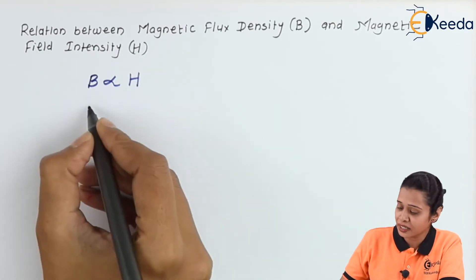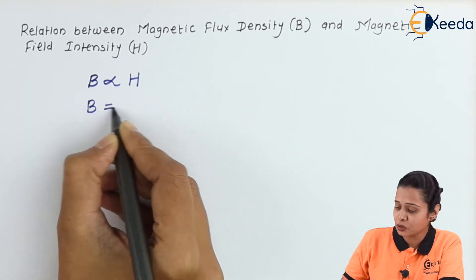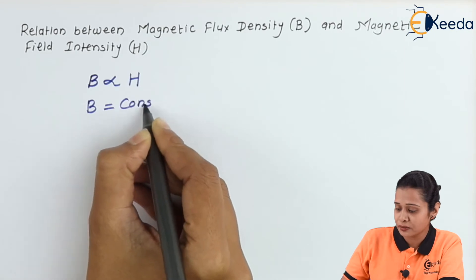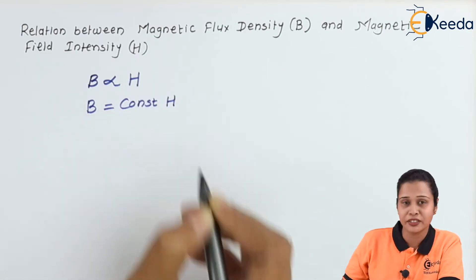Hence, we can write here B is equal to mu constant into H.